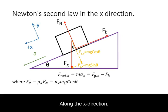Along the x direction, the forces are the x component of the force of gravity in the positive x direction, and the force of kinetic friction in the negative x direction. Keep in mind that the force of kinetic friction is equal to the coefficient of kinetic friction times the normal force.